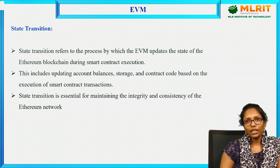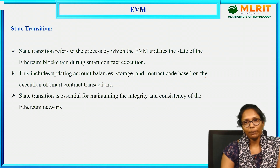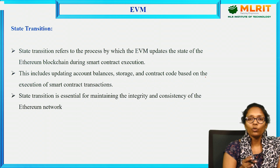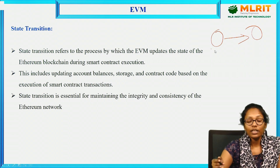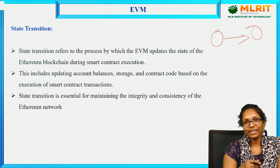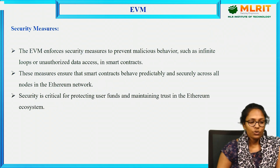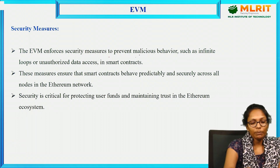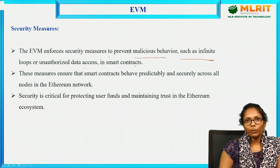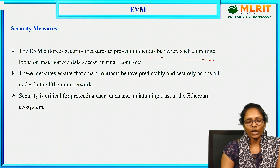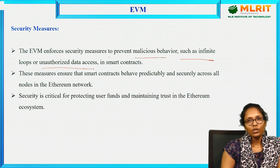Regarding state transition, as discussed in the previous video, after completing a transaction the account balances are updated — meaning the system transitions from one state to another. The EVM performs state transition after completing smart contract execution. For security measures, the EVM enforces measures to prevent malicious behavior such as infinite loops, integer overflow or underflow conditions, and unauthorized data access in smart contracts. EVM ensures these security measures while running smart contracts.